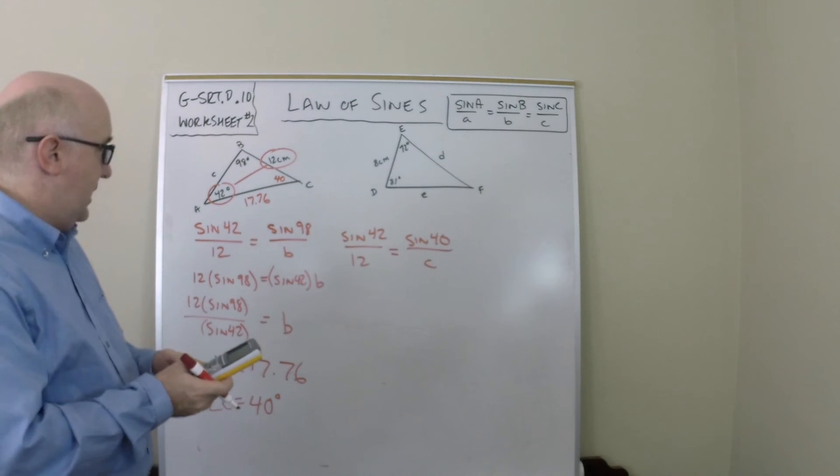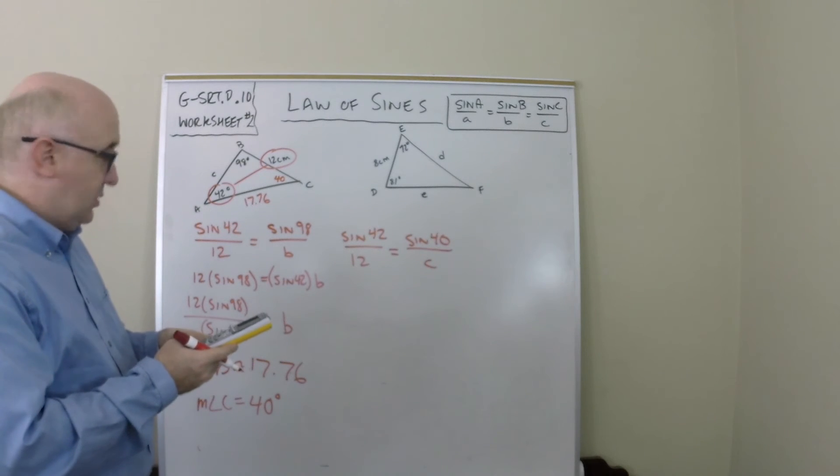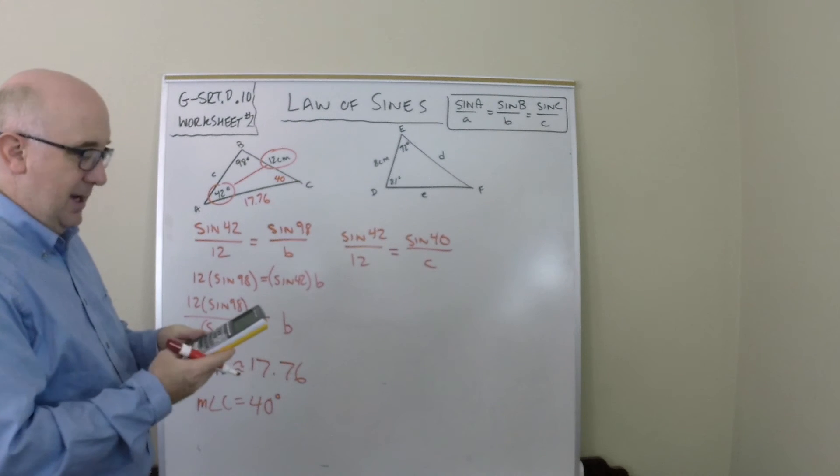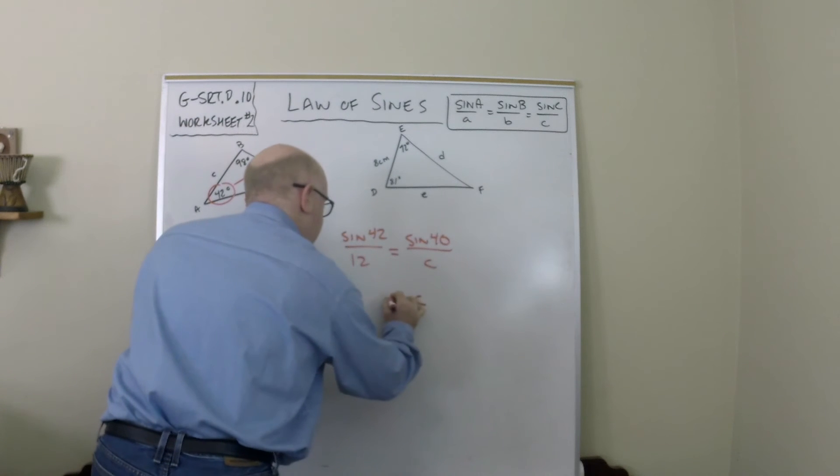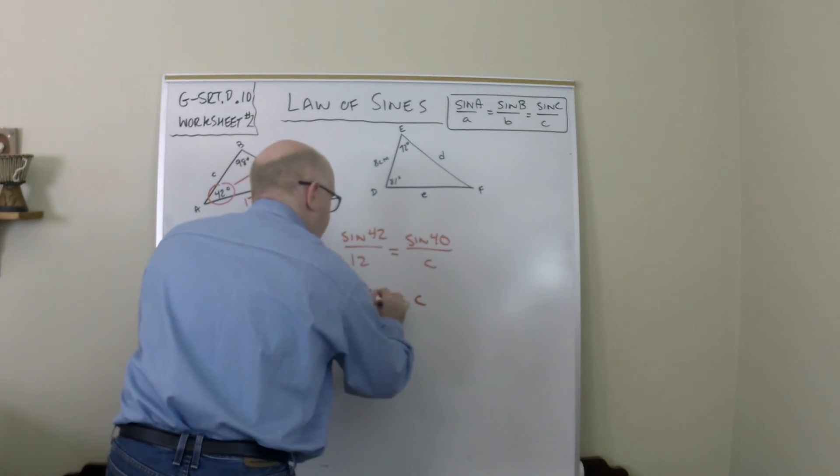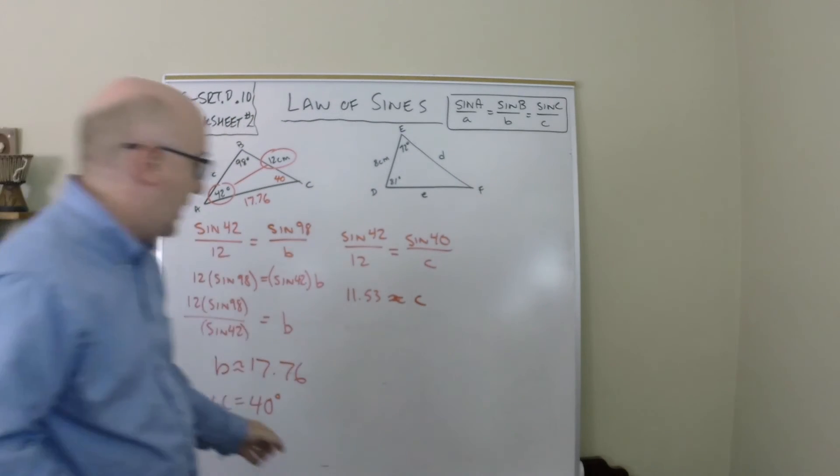It would be sine of 40 times 12 divided by sine of 42. I get c being approximately 11.53, and I've solved out the full triangle.